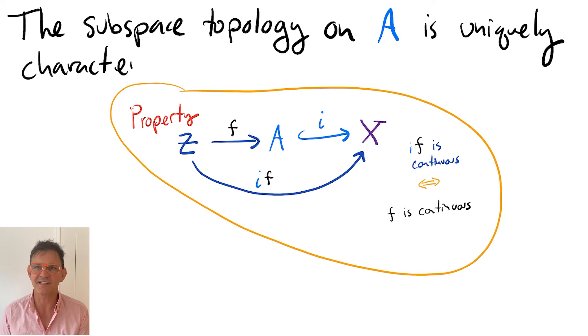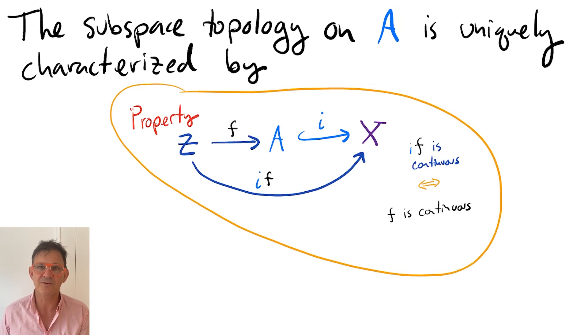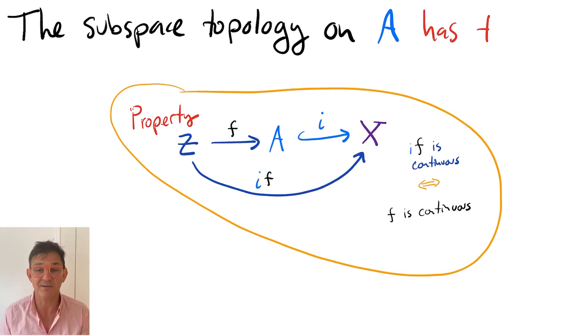The claim is that the subspace topology is uniquely characterized by this property. And we can break down this claim into two parts.